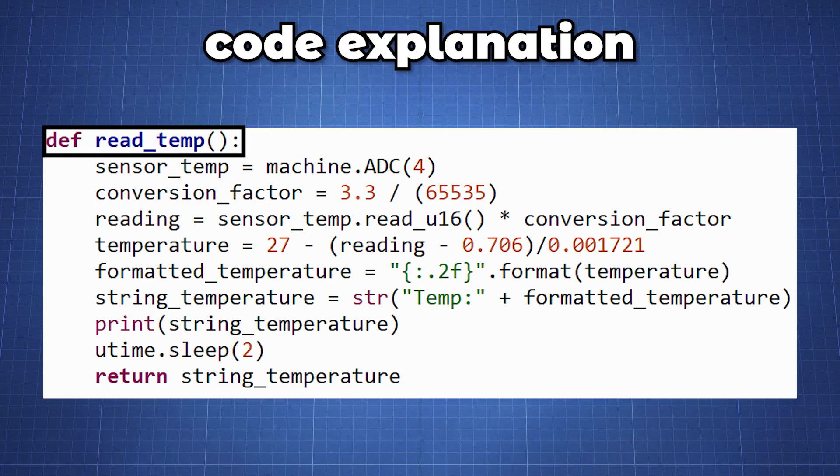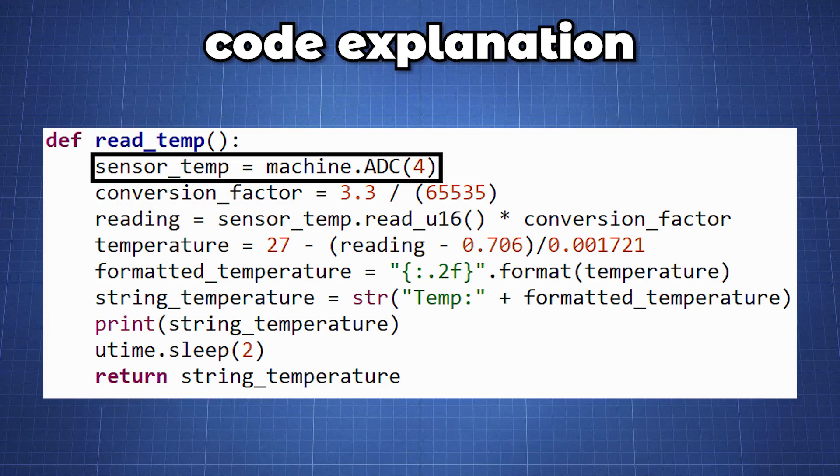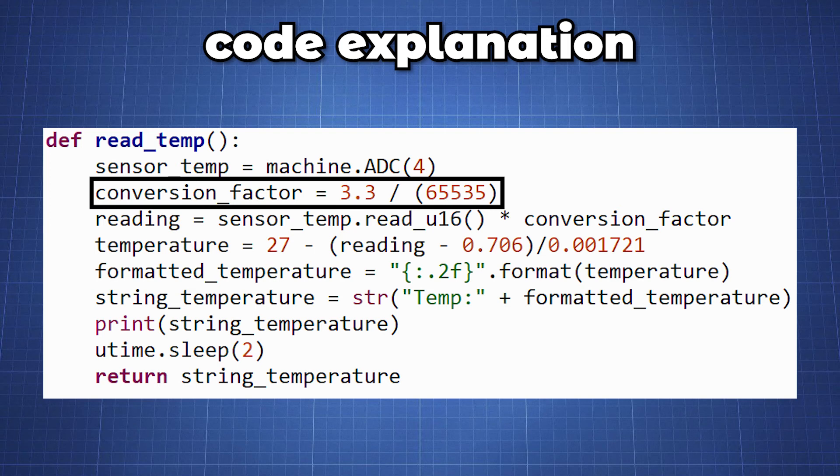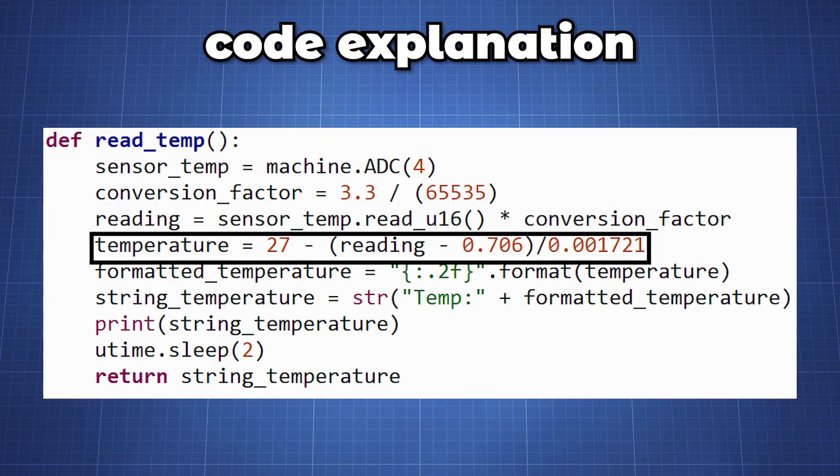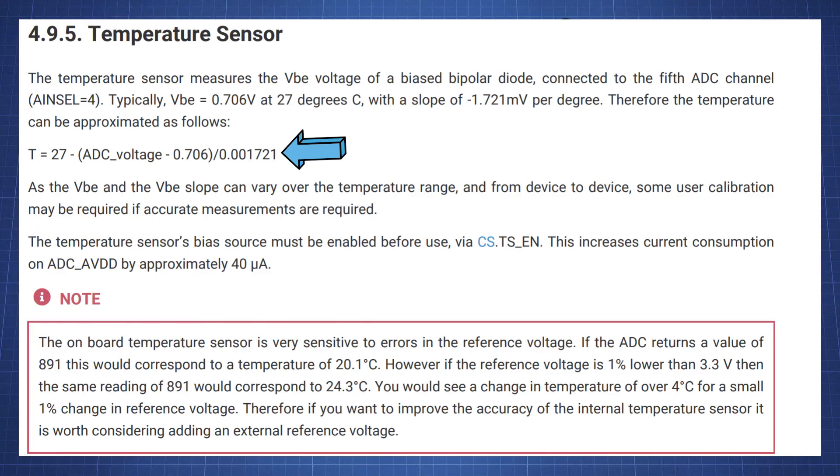The most important part will be the function here, read_temp. We create a variable sensor_temp and set it equal to the analog digital converter 4 where the temperature sensor is connected. We then create a conversion factor which we will need to convert the analog data to a voltage level. We then read all the analog data and multiply it with the conversion factor. We then set the temperature here using the formula provided by the datasheet of the Raspberry Pi Pico.